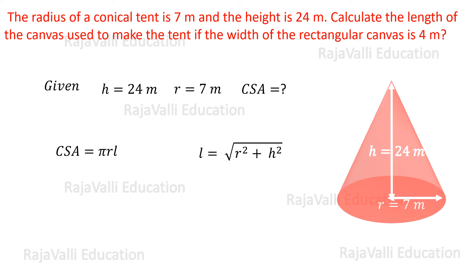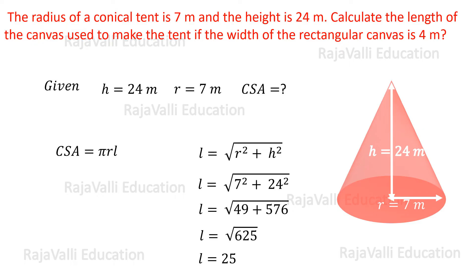The slant height of the conical tent is equal to the square root of r² + h². Substituting the radius and height values in this equation, we get the slant height. Now we have the radius, slant height, and the value of π, which is 22/7. Substituting these three values in the CSA equation.